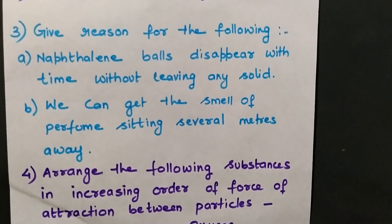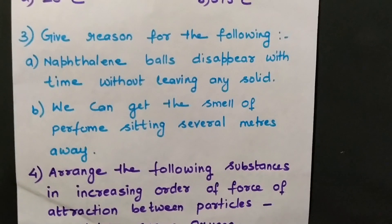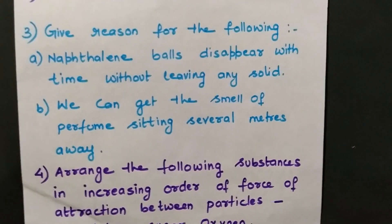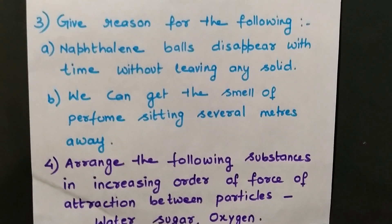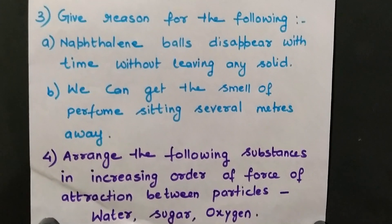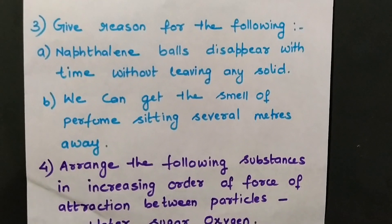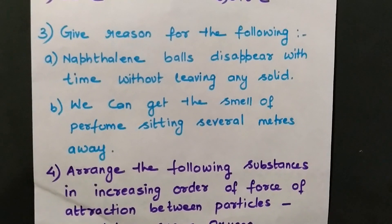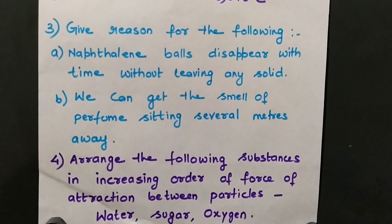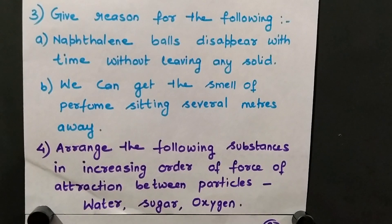The next part: we can get the smell of perfume sitting several meters away. Perfume is actually a mixture of a number of pleasant-smelling vapors. As we know, the rate of diffusion is maximum in the gaseous state, so it diffuses quite fast and reaches a person who may be even several meters away from the person who has applied the perfume.